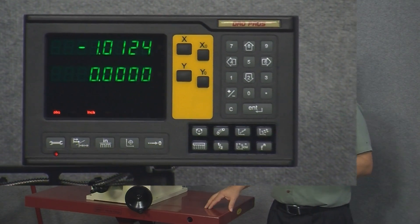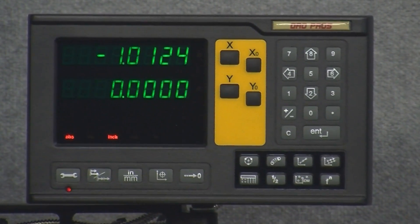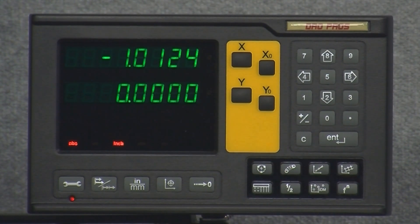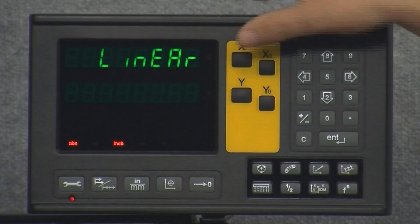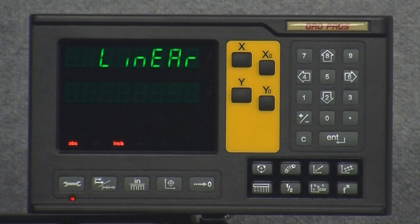Now, to enter setup mode, you simply push the wrench key. It's the lower leftmost button on the display. And you should now see select on the x-axis window. And what the display is asking you to do here is it wants to know which axis you want to change. We want to change the x-axis direction, so we'll go ahead and push the x key one time. And the display should now read linear.